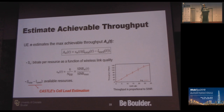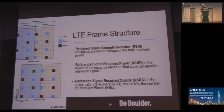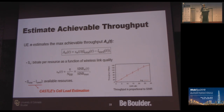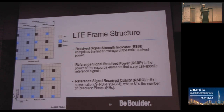The achievable throughput at every point in time is estimated based on the SINR received and the cell load. One important observation from our experiments is that as the SINR value increases, the achievable throughput also increases. The second key factor is the cell load present in that particular cellular channel.